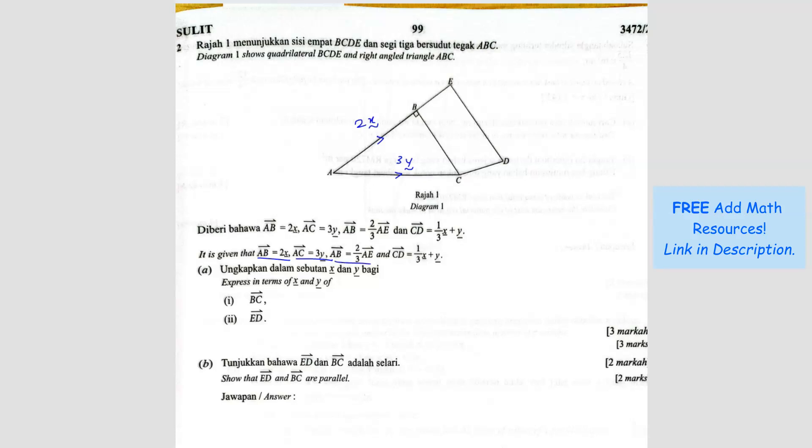And then AB is 2 over 3 AE. So AB is 2 over 3 of AE. Since we have AB is 2X, we can substitute 2X and then find AE. So I bring the 2 over 3 over, becomes 3 over 2, equals to AE. So we can know that AE is equal to 3X.